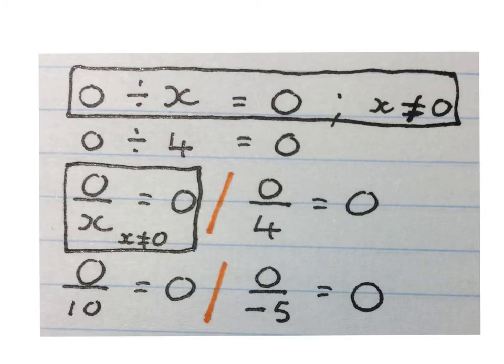The last two properties of this video where we're going to work with division and 0, you must get your head around. Firstly, when you take 0 and you divide it by any value except 0, the answer is always 0.